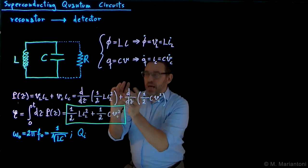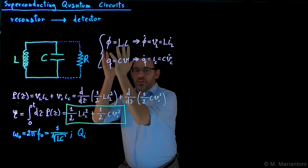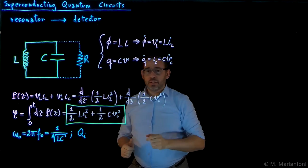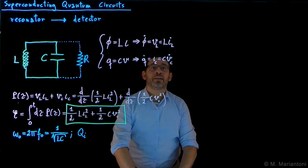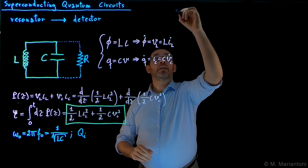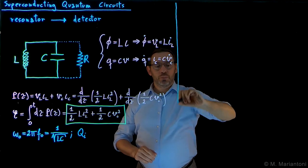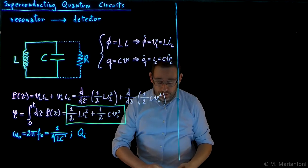As it turns out, linear harmonic oscillators or resonators, like the LC resonators studied here, are not sufficient to implement a superconducting qubit. In fact, in order to implement a superconducting qubit, we need a non-linearity.